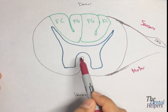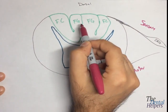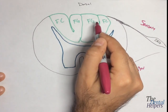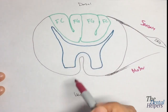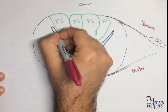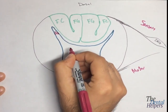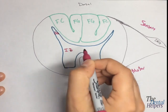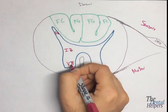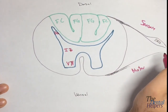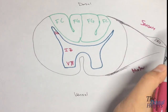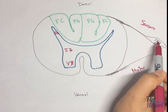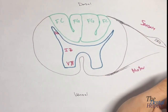Looking at the spinal cord, the parts we have to know are the fasciculus gracilis (FG) and the fasciculus cuneatus (FC). This is the horn itself, and we have different parts: the dorsal horn, the intermediate zone, and the ventral horn. Drawn out here is the dorsal root ganglion. Coming out of the dorsal is sensory — it's where signals enter and exit. The ventral is motor, and it's where those signals enter and exit.